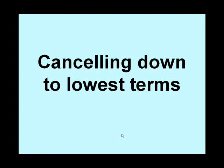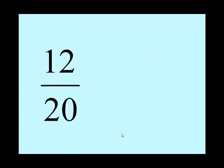Right, cancelling down to lowest terms. Sometimes in fractions you get something that looks a bit like that. So you've got a number on the top and a number on the bottom, and there is a common factor between the numbers. So have a guess what the common factor might be, just take a couple of seconds to think.